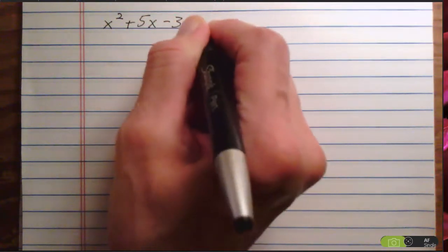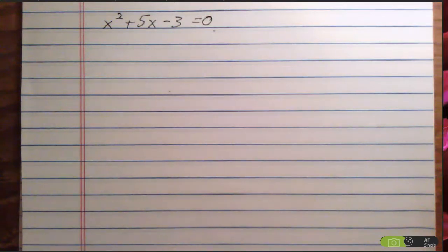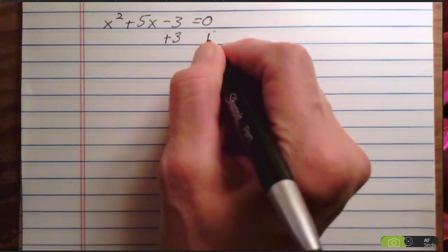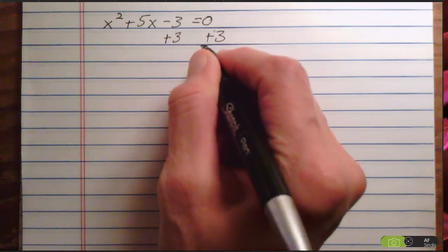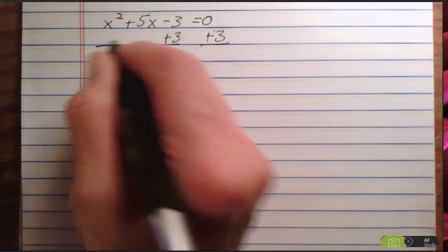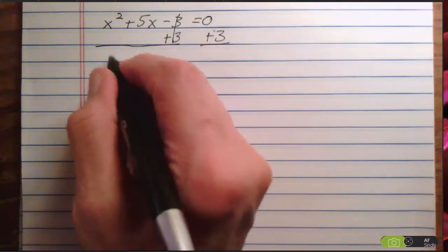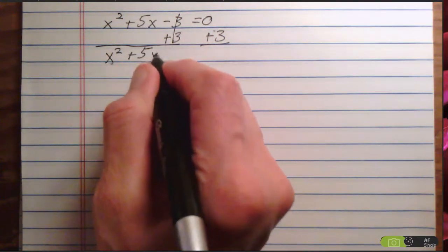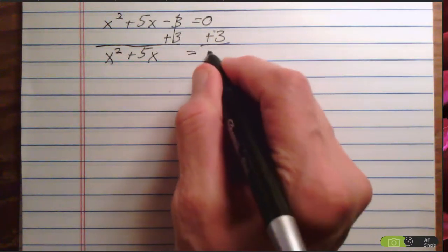Suppose I have x² + 5x - 3 = 0, and I am going to solve that by completing the square. The first step is to move the constant term over to the right-hand side. That will give me x² + 5x = 3.